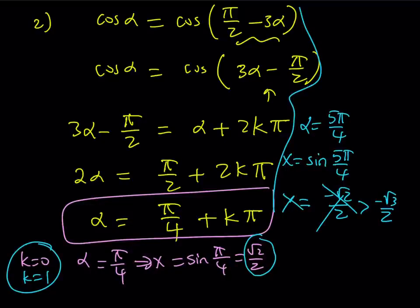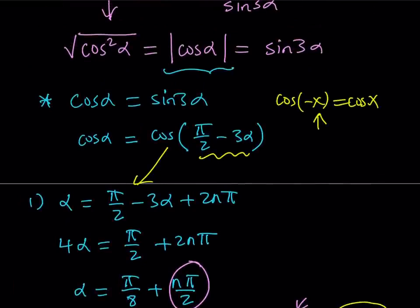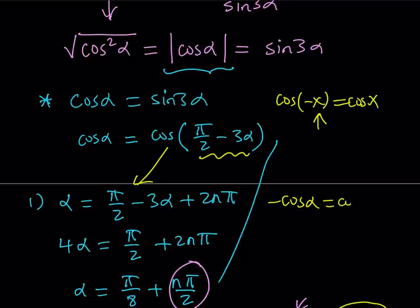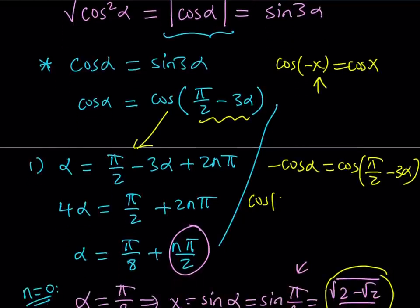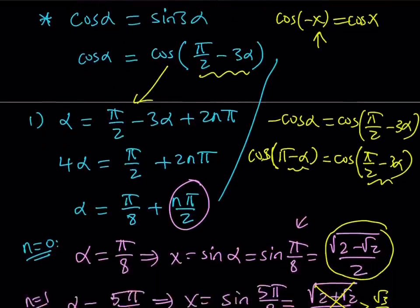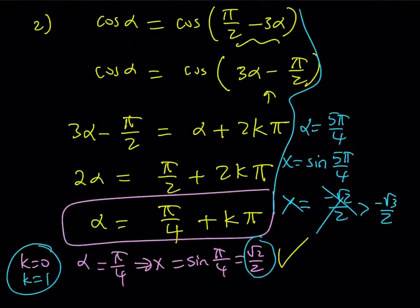There's still the case where cos α < 0, meaning −cos α = sin 3α, which can be written as cos(π − α) = cos(π/2 − 3α). If you work through this, you end up running through the same alpha values, so the solutions obtained are not new — they either repeat what we already found or fail the domain check. So we don't get any additional solutions from this case.